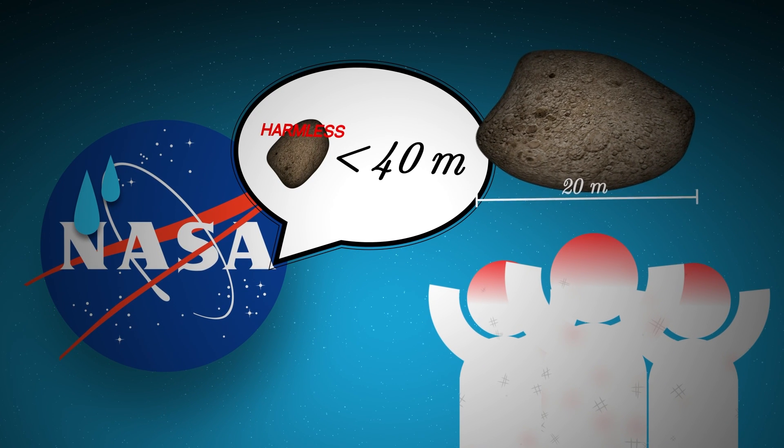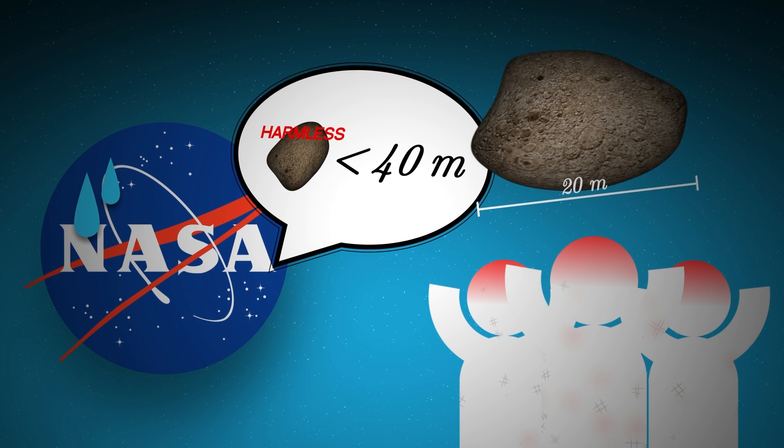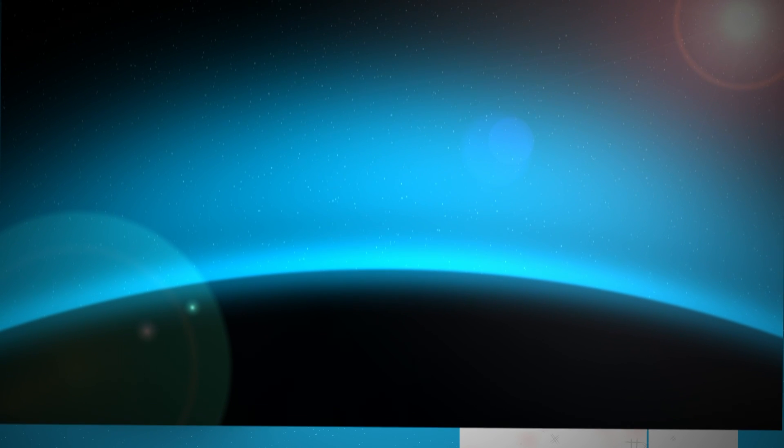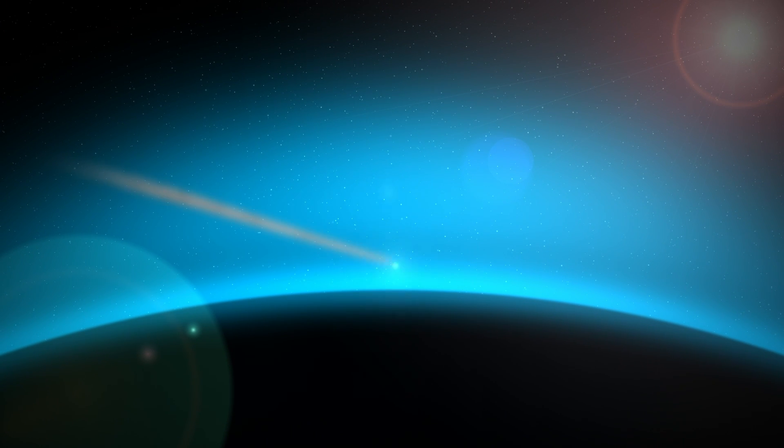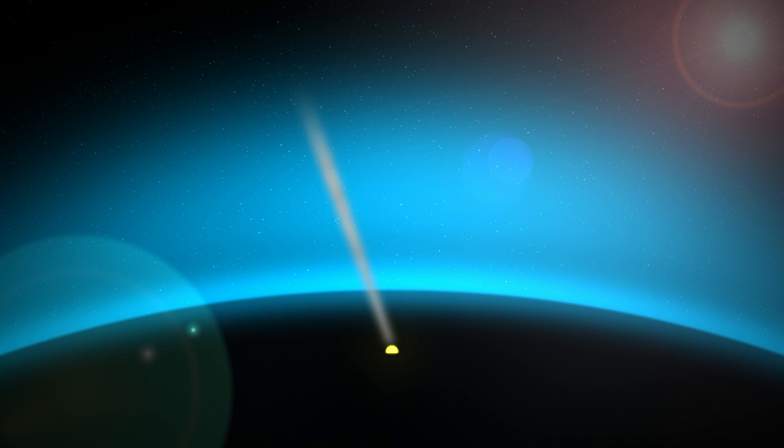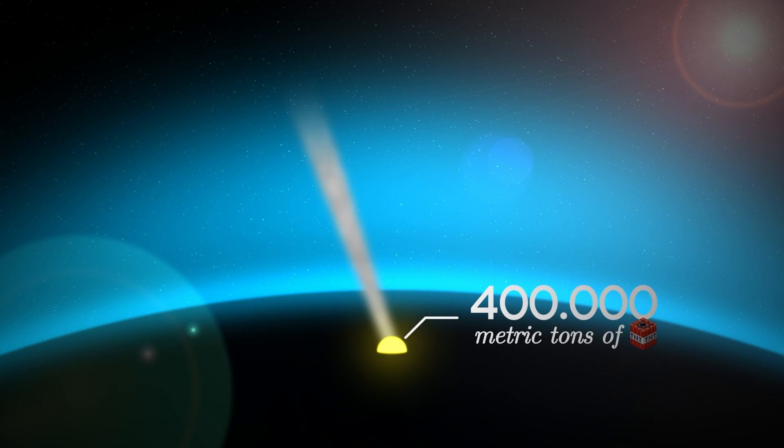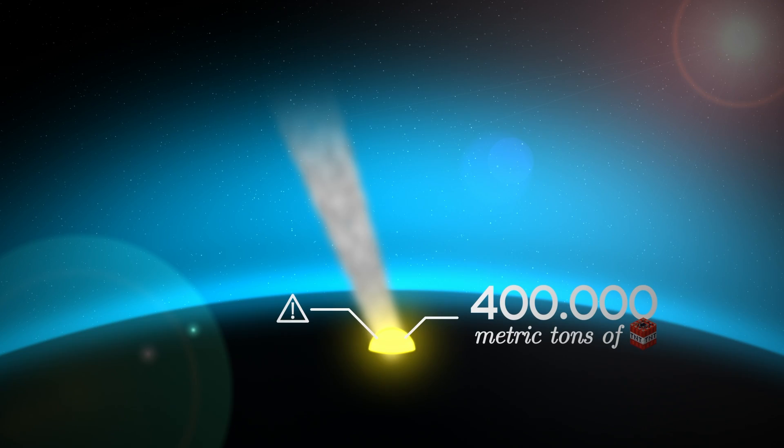It didn't wipe out any species, but it did create an emergency situation. And it probably could have been worse if, instead of entering the atmosphere at such a shallow angle, it had plummeted straight down. The explosion, equivalent to over 400,000 metric tons of dynamite, would have occurred closer to the ground, wreaking even more havoc.